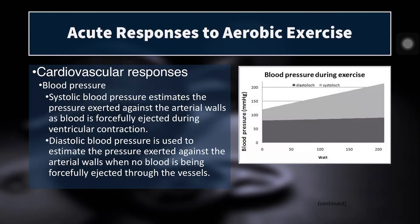There are also blood pressure responses to exercise. Looking at the graph, diastolic blood pressure remains just about constant, whereas systolic blood pressure rises. Systolic blood pressure is when the heart is contracting — it estimates the pressure exerted against the arterial walls as blood is ejected during ventricular contraction. Diastolic pressure estimates the pressure against the walls when no blood is being forced through the vessels.